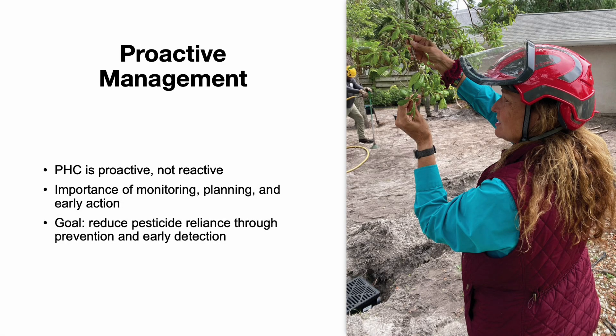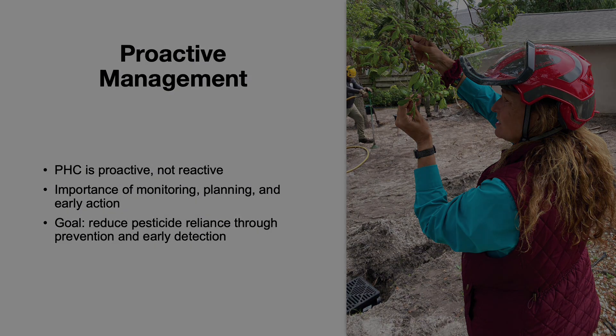PHC is all about being proactive. Instead of waiting for visible signs of decline, we try to prevent problems before they start. That means good plant selection, improving soil conditions, and ongoing monitoring. By catching issues early, we can avoid the need for excessive treatment later on.